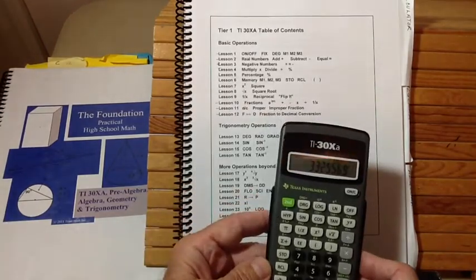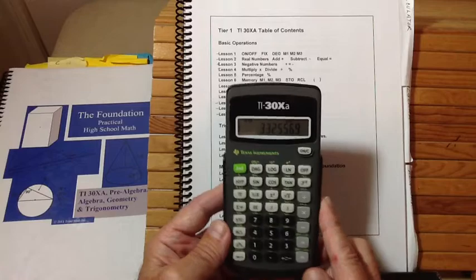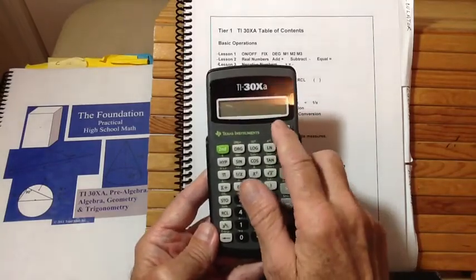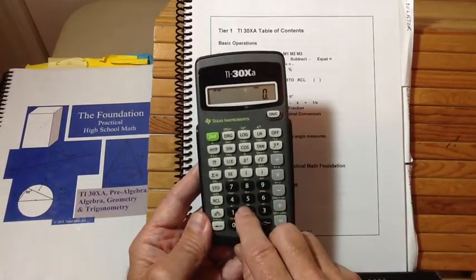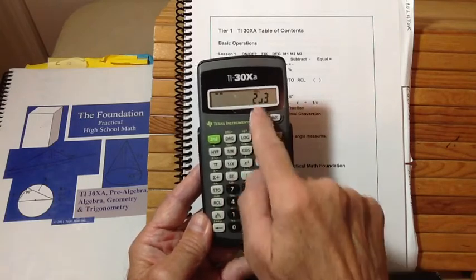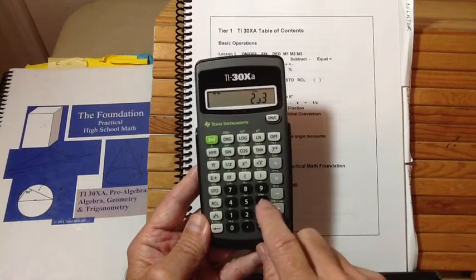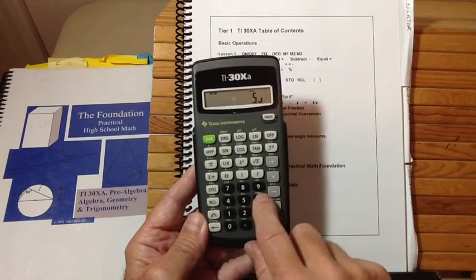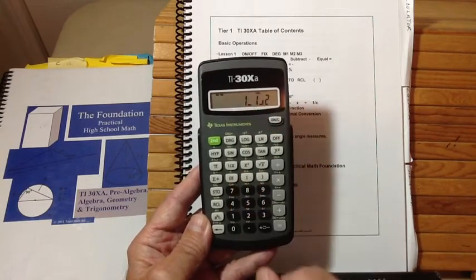And then after we've shown the memory registers and how that works, then we begin to show them some of the other functions. One of the most important things is the fraction keys on this. So I'll turn this off, and you take two and hit this key here. That'll be two. Hit three. Now you've got the fraction two-thirds. If you want to add that to the fraction, say, five-sixths, you do that. Hit equal, and there's a fraction one and a half.